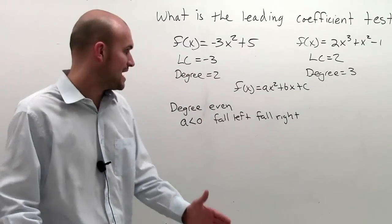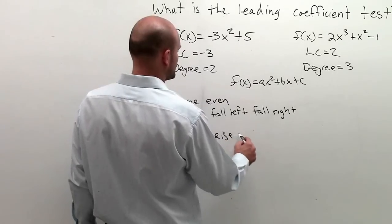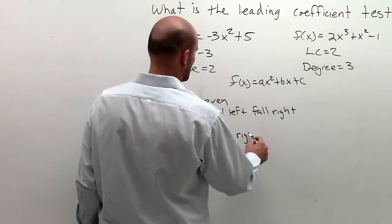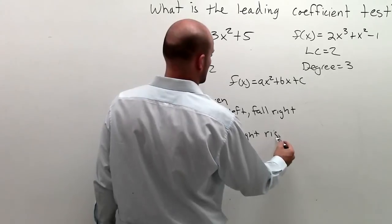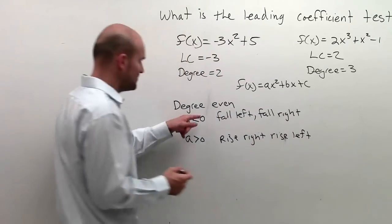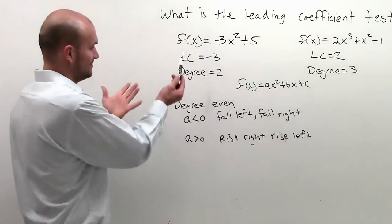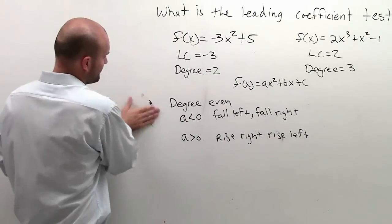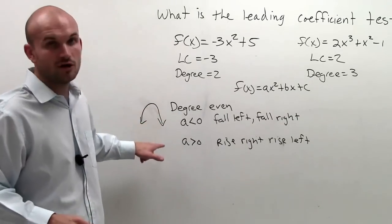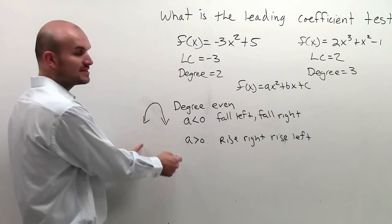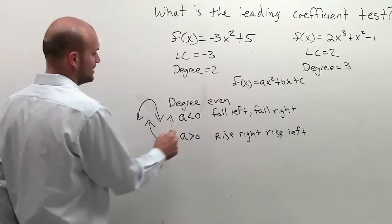So that means the graph is going to be going downward like that. If a is greater than 0, your graph is going to rise right and rise left. The main important thing you guys should understand is the leading coefficient test, when we say it falls left and falls right, that means the end behavior of the graph is going to continue down. And rise right and rise left is going to look something like that, like an upward parabola.